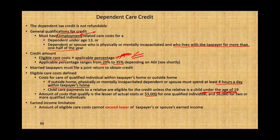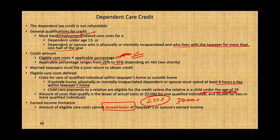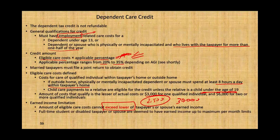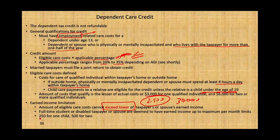For the earned income limitation, the amount eligible for care costs cannot exceed the lower of the taxpayer's or spouse's earned income. For example, if one spouse earns $30,000 and the other earns $2,500, the limit is applied to the $2,500. Full-time students or disabled taxpayers or spouses are deemed to have earned income up to the maximum per month limit — $250 for one qualifying individual or $500 for two or more — because you must have earnings to qualify for the credit.